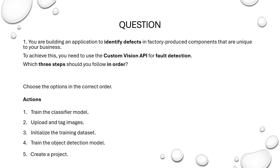Let us break down the question. What are the keywords? The keywords are: identify defects in factory produced components — so we have to identify defects in the component. The service mentioned here is the custom vision API, and we have to select three steps in the correct order to achieve that requirement.